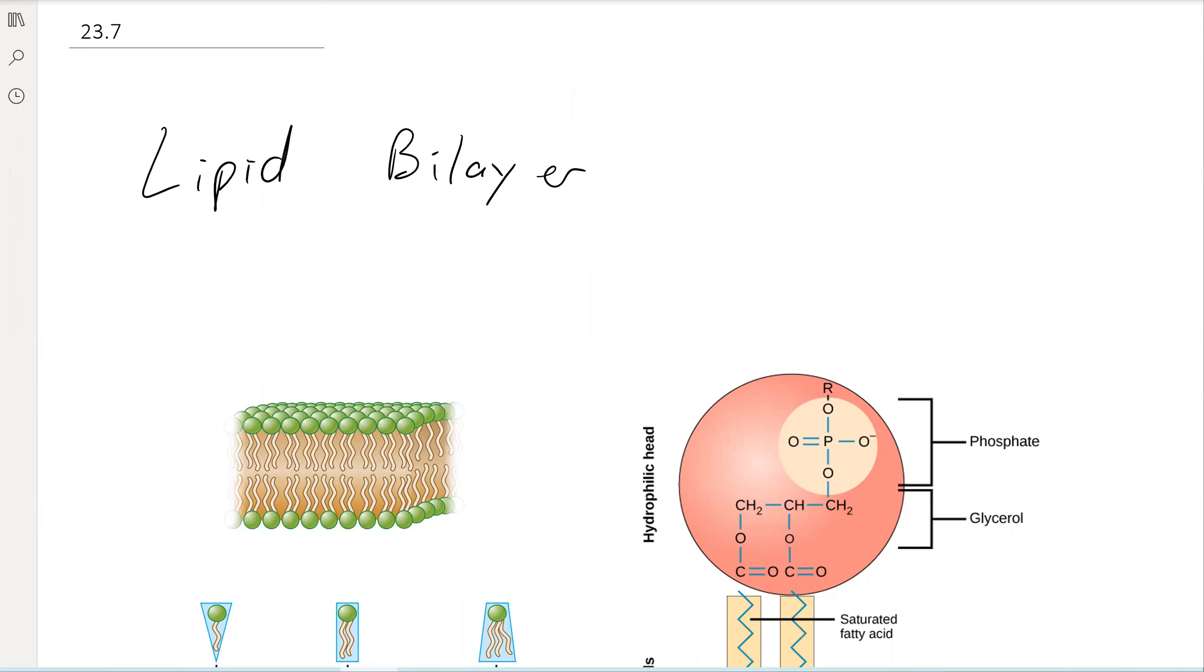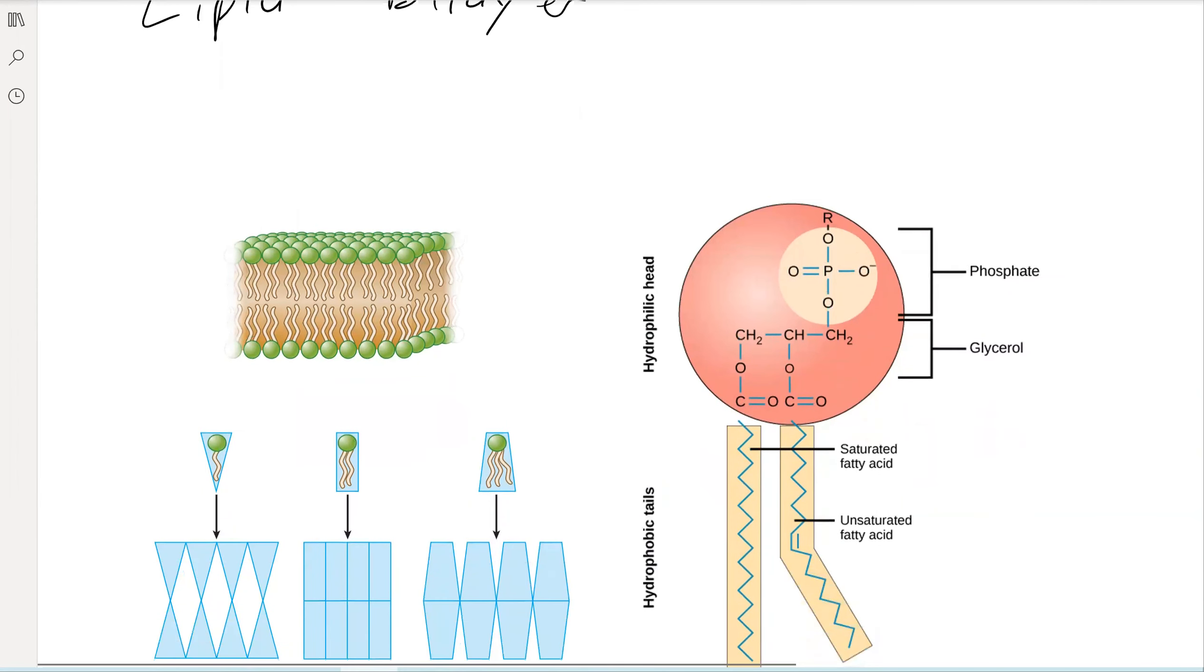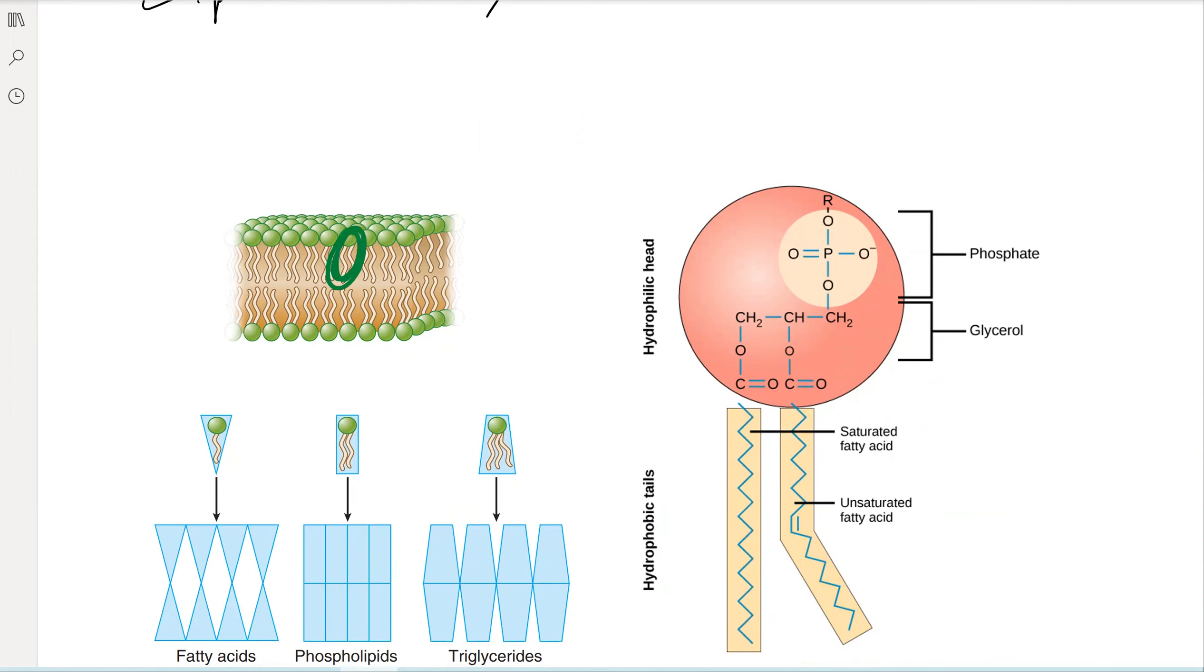The lipid bilayer is the outside of the cell. You can see this pictorial representation of them, and you can notice that in this one our triglyceride actually has only two little legs.